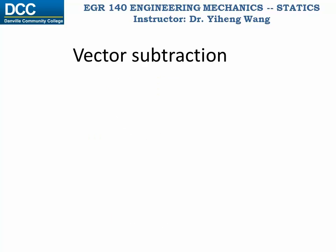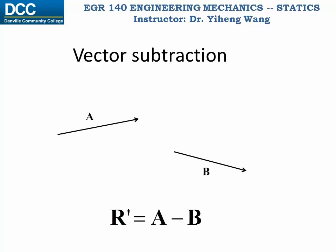What if we want to do vector subtraction? For example, what is r' that equals a minus b? Since subtraction can be considered as addition with a negative quantity, we can first find the vector negative b, which has the same magnitude but opposite direction as vector b. Then we can simply add vector a and vector negative b together, using either parallelogram law or triangle rule.